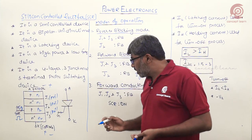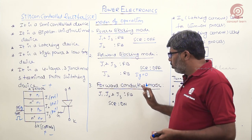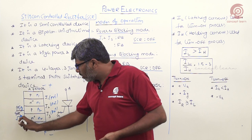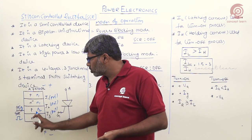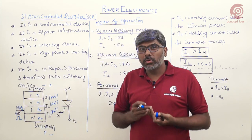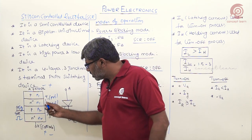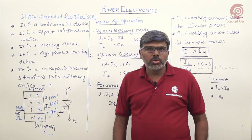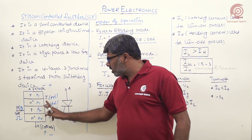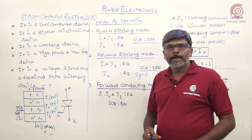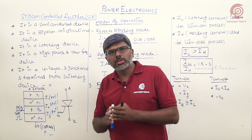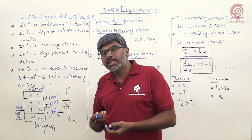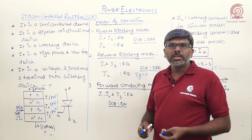The third mode is the forward conducting mode. Here, the anode is positive with respect to cathode and a positive gate signal is applied. When the positive gate signal is applied, the reverse biased junction J2 comes to forward bias. Now all three junctions J1, J2, and J3 are in forward bias. With all junctions forward biased, the depletion region width is nearly zero, allowing current to flow from anode to cathode — SCR is now in the on state.